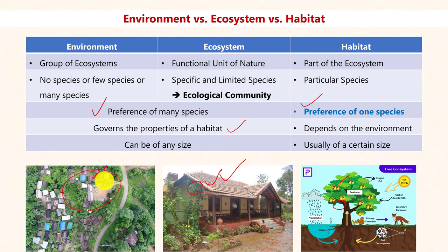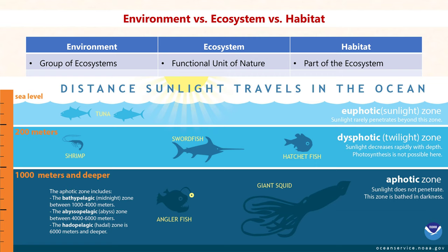An environment or a habitat can be of any size. The entire earth can be considered an environment, and even Mars can be considered an environment, because even without life there are interactions between abiotic components. Ecosystems, on the other hand, are confined to earth because life is an essential component. The world's oceans are the largest ecosystem, and the entire earth can be considered one single environment. Within the largest ecosystem — the ocean — there are various individual habitats such as the Pacific Ocean, photic habitat, and aphotic habitat.